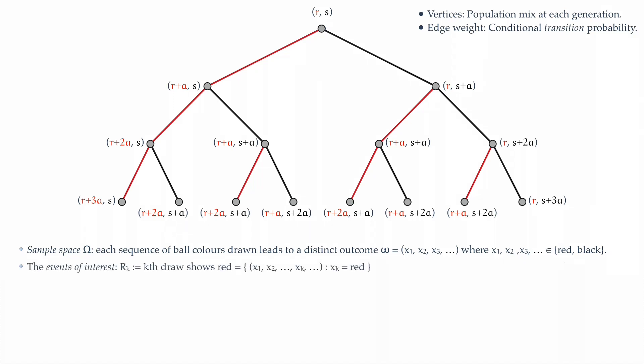What are the events of interest? Now naturally enough, we identify the events of interest with the color of the ball drawn at a given step. Let us say at the kth step, R sub k denotes the event that the kth ball drawn was red. So R1 represents the event that the first ball drawn was red.